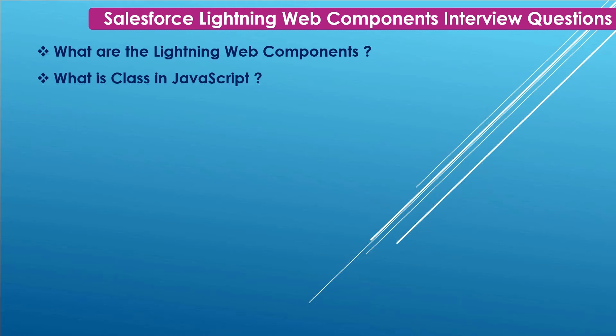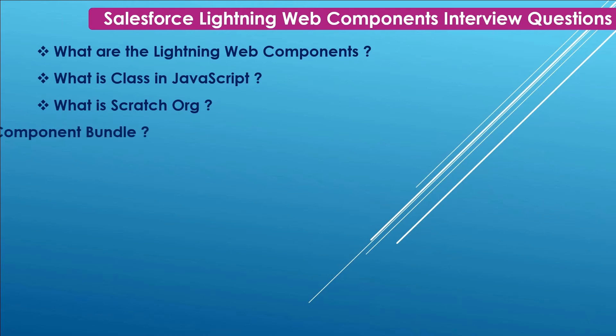Next: What is a class in a JavaScript file? A class is a type of function, but instead of using the keyword 'function' to initiate it, we use the keyword 'class', and properties are assigned inside the constructor method. Next: What is a Scratch Org? A Scratch Org is a disposable Salesforce org used for development and testing. It can be created for a maximum of 30 days, after which the Scratch Org gets deactivated. The default duration is seven days.